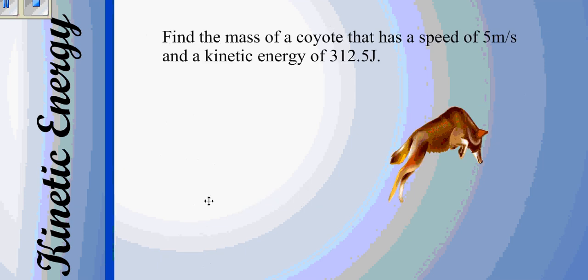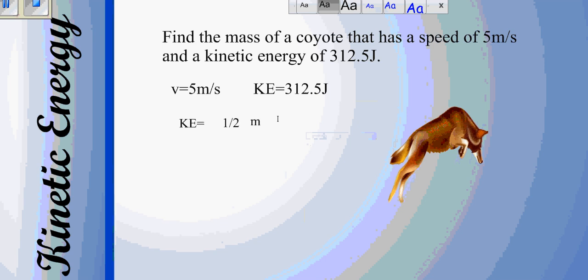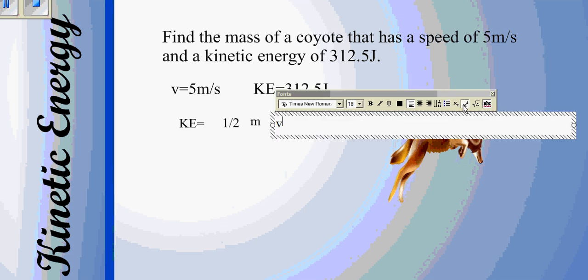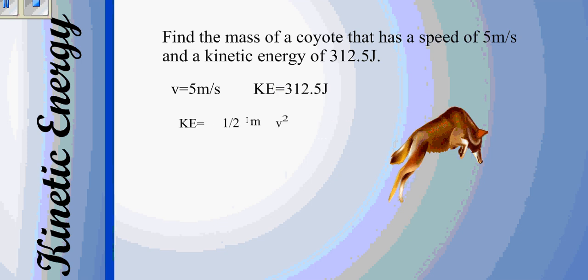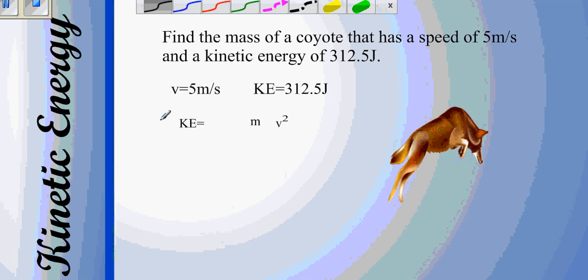And then going on to one final problem, if we wanted to find the mass of a coyote that has a speed of 5 meters per second and a kinetic energy of 312.5 joules, once again, we write down what we know. We write down our equation. We know our equation is KE equals one half mv squared, but this time we're solving for m. So things are going to be a whole lot easier. The one half is going to go away because we multiplied both sides by 2. So we get 2KE is equal to mv squared. And then to get the v squared on the other side, we have to divide by that. So we get 2KE over v squared is equal to m.